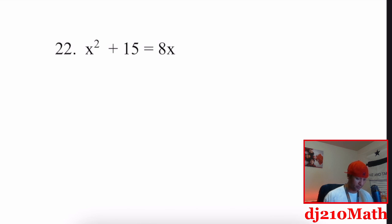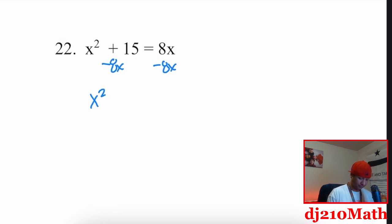Last one: move terms — minus eight X, minus eight X — giving X squared minus eight X plus 15 equals zero.